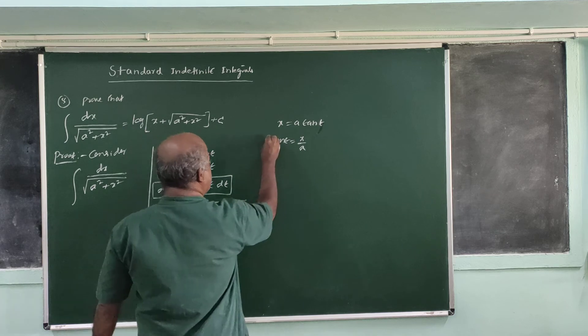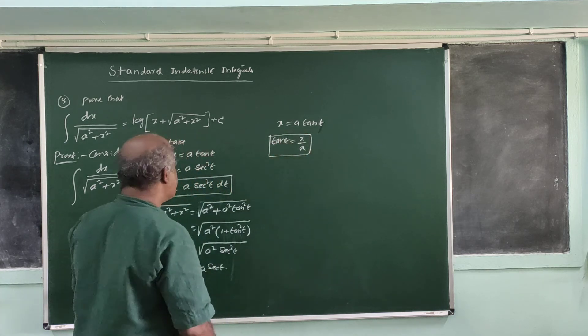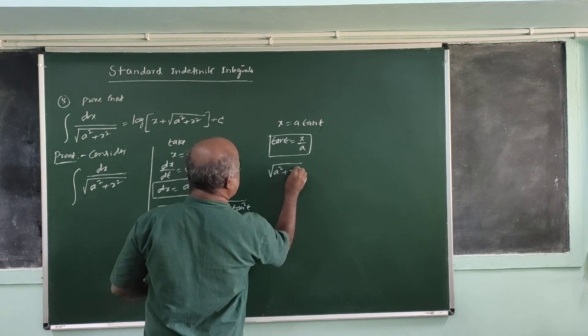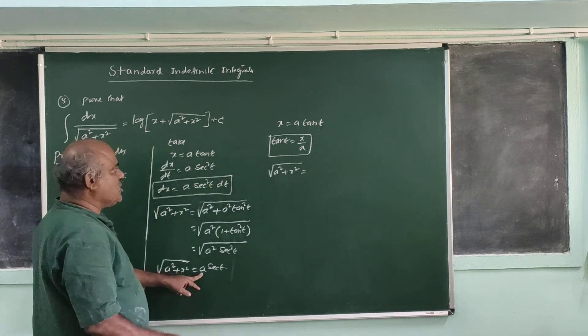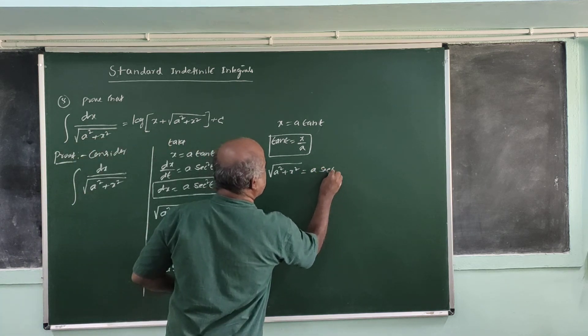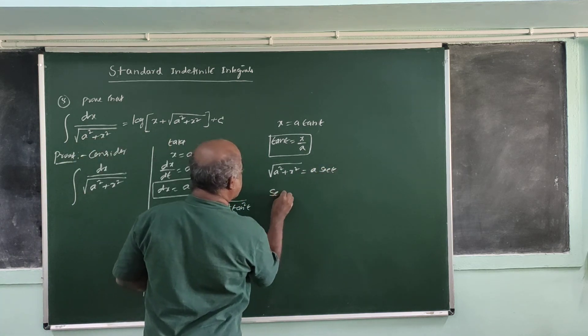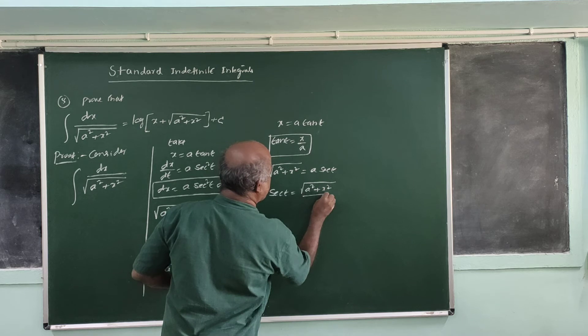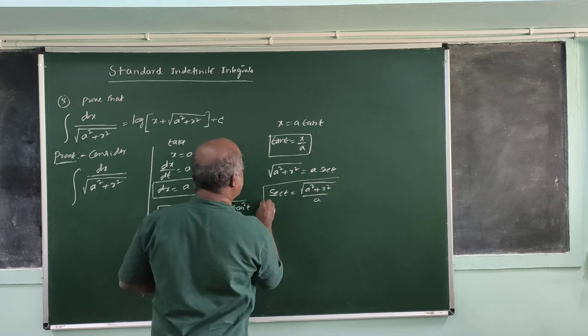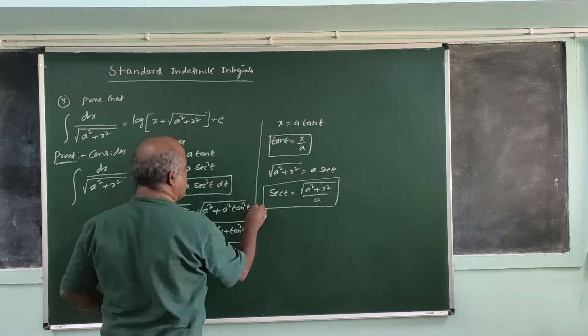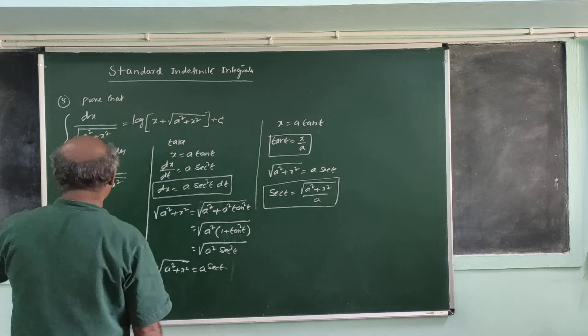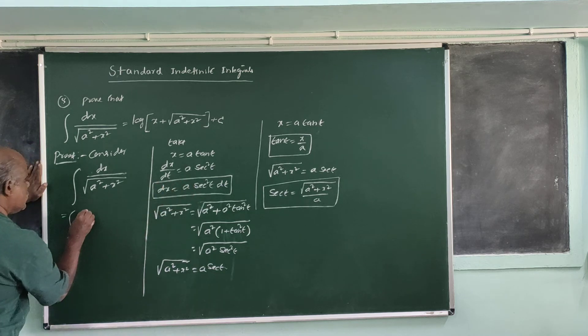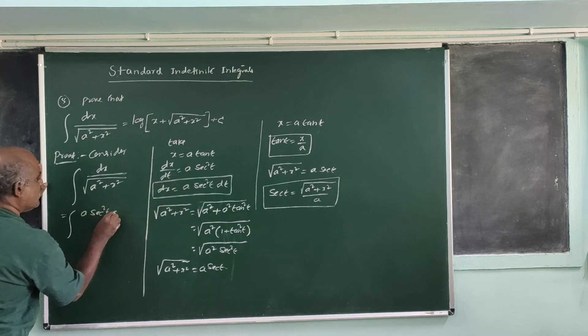Since a squared plus x squared equals a squared times 1 plus tan squared t, and 1 plus tan squared t equals secant squared t, the root of a squared plus x squared equals a secant t.